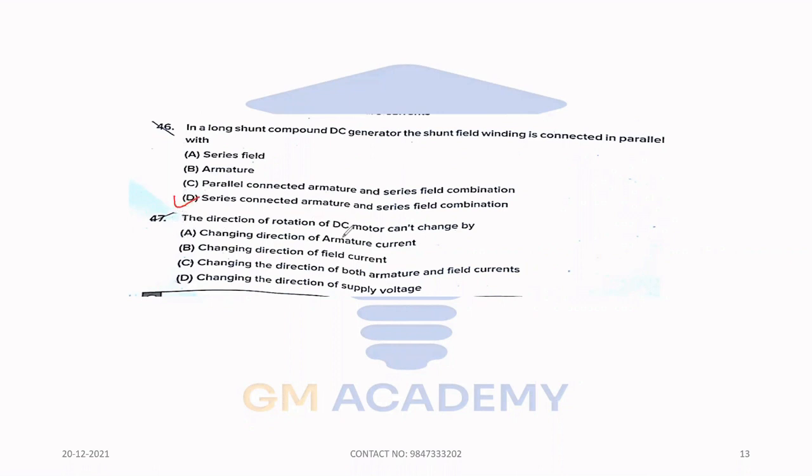Forty-seven. The direction of rotation of DC motor cannot change by. The direction of rotation can be changed by reversing either the armature or the field current. This is option C. For changing the direction of both armature and field current, or changing the direction of supply voltage, we will not change the direction. So this is a question to be cancelled.